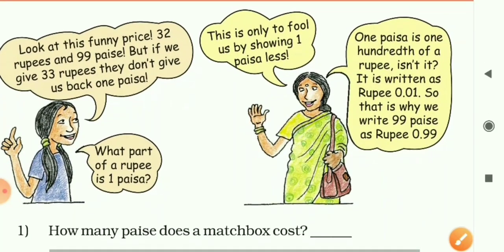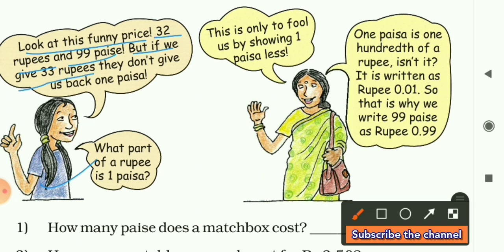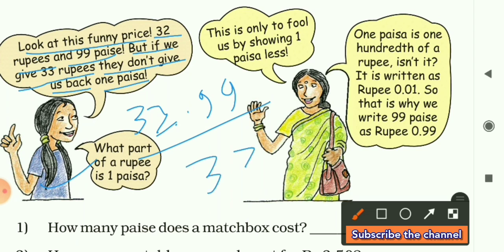A girl is saying: look at this funny price — 32 rupees and 99 paise! But if we give 33 rupees, they don't give us back 1 paise. Yes, the price for a pair of slippers was 32 rupees and 99 paise. If we pay 33 rupees, the shopkeeper does not return 1 paise to us.